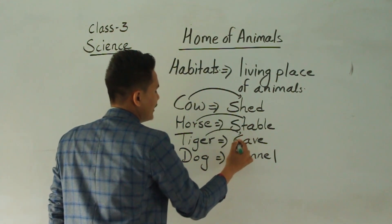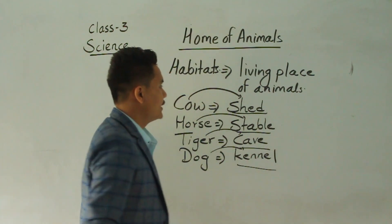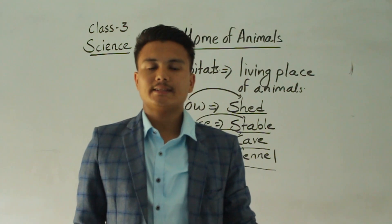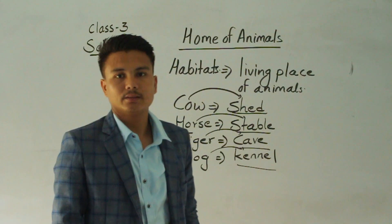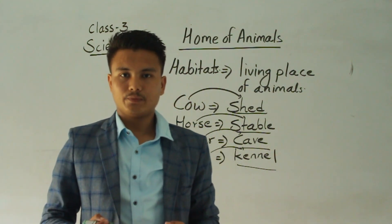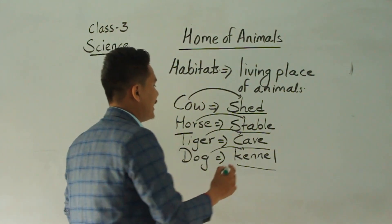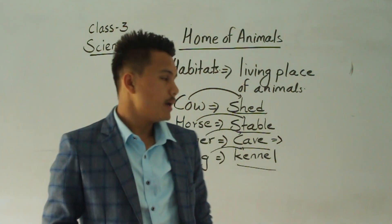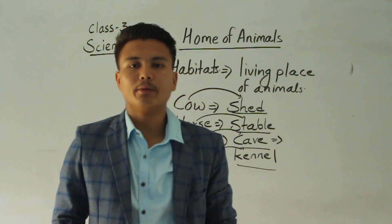So, habitats are basically of two types: one is natural habitats and another is artificial habitats. Some animals have their natural habitats — their homes are made by nature. For example, tigers have their own natural home, a cave. But some animals make their home by themselves — for example, birds.